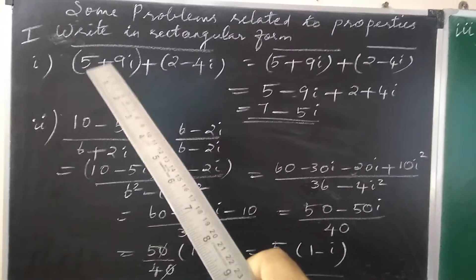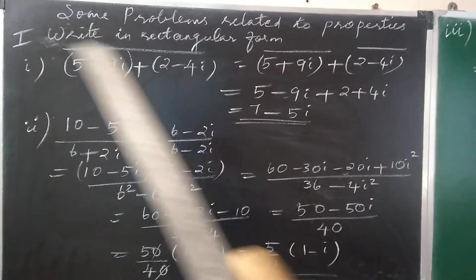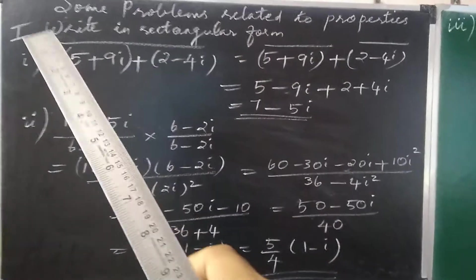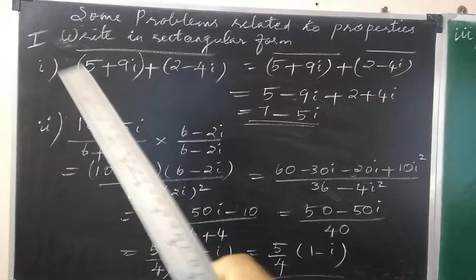The first one: 5 plus 9i plus 2 minus 4i, conjugate. We want the conjugate of the sum.